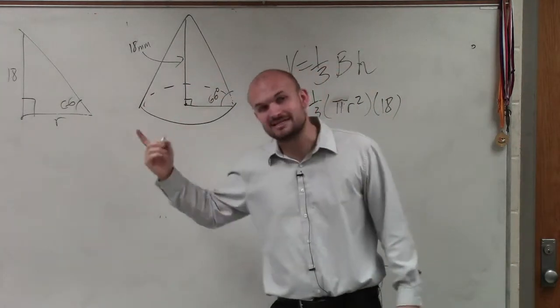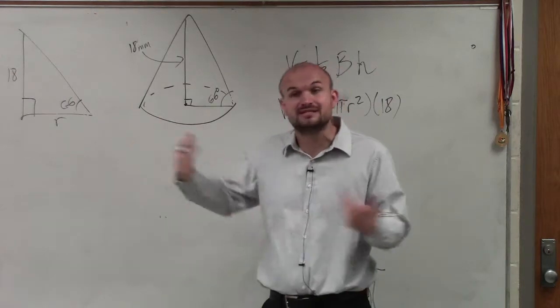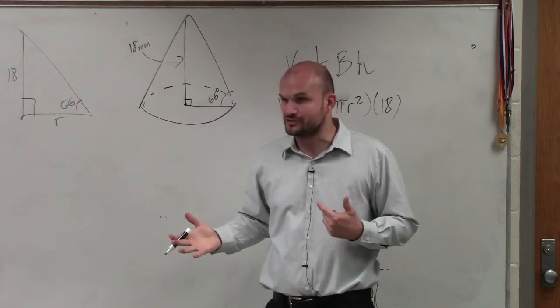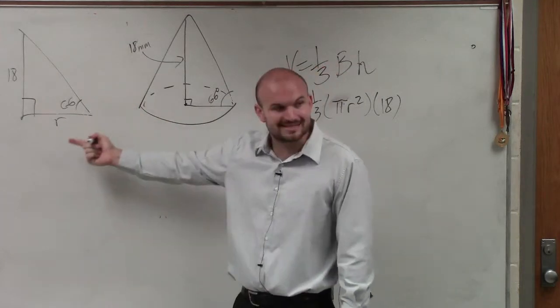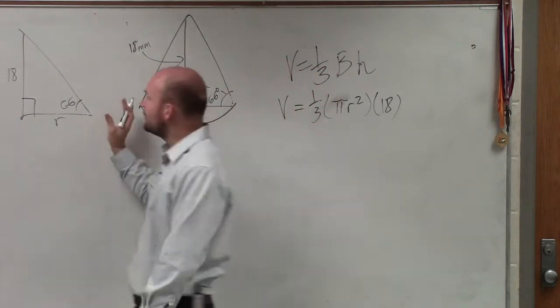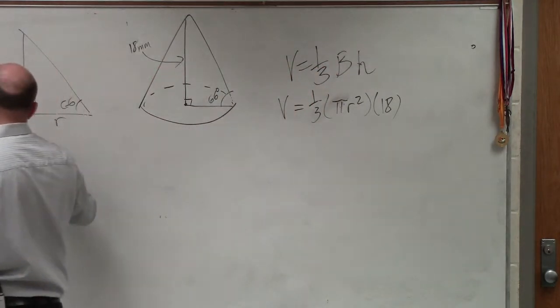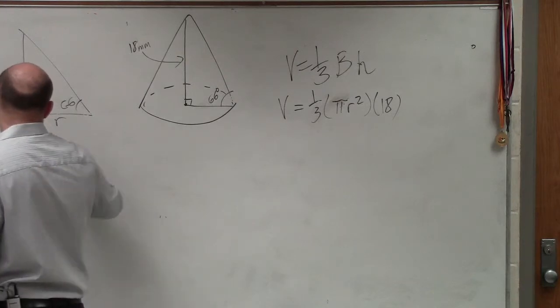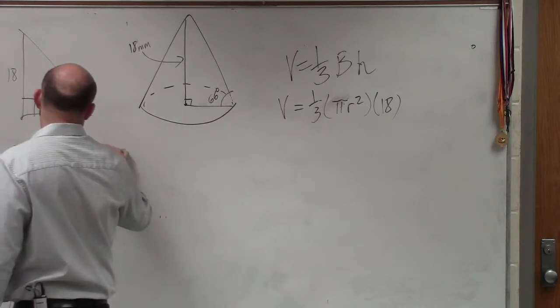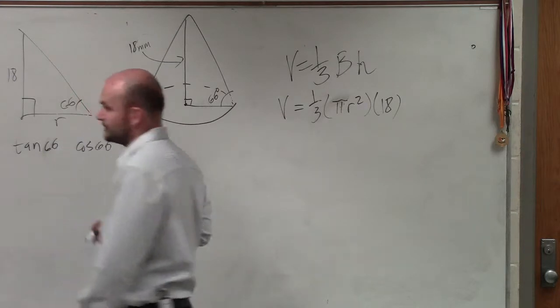That's 66 degrees, not 60 degrees. If that was a 30, 60, 90, you could use your special right triangle relationships. But since it's not 60 degrees, it's not a special right triangle, therefore, I have to use either tangent of 66 degrees, cosine of 66 degrees, or sine of 66 degrees.